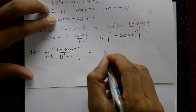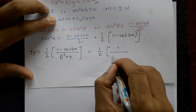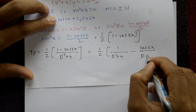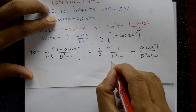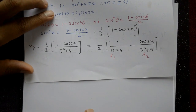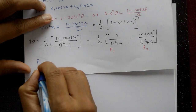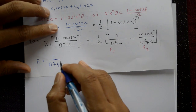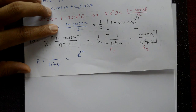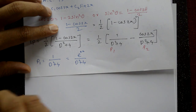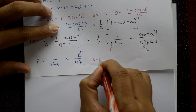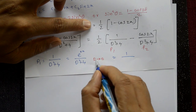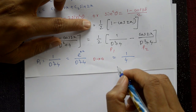Separate the terms: yp = 1/2 into [1 upon (D-squared plus 4) minus cos(2x) upon (D-squared plus 4)], calling these P1 and P2 respectively. For P1: treating 1 as e^(0·x), this is Type 1 with a equal to 0. So P1 = 1 upon (0 plus 4) = 1/4.